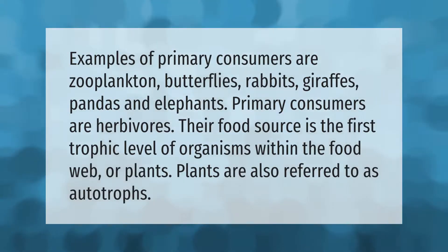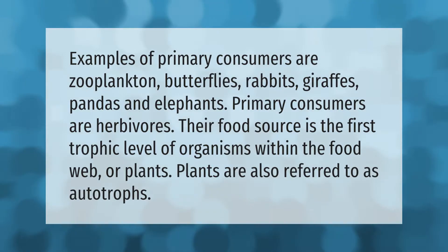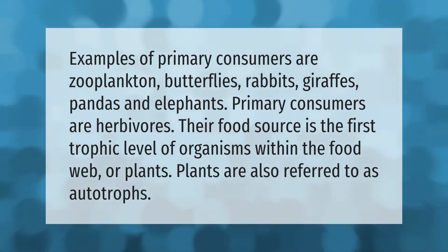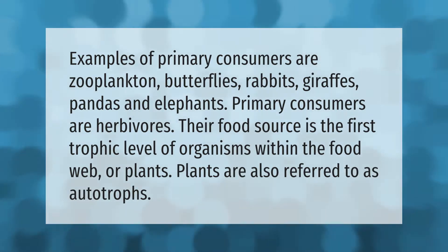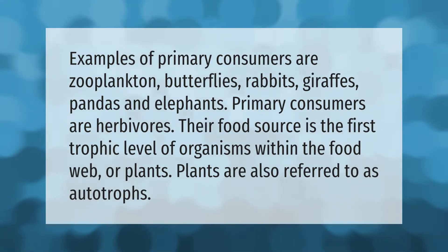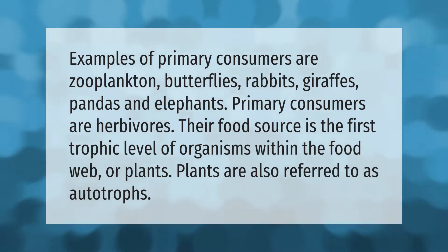Examples of primary consumers are zooplankton, butterflies, rabbits, giraffes, pandas, and elephants. Primary consumers are herbivores. Their food source is the first trophic level of organisms within the food web — plants. Plants are also referred to as autotrophs.